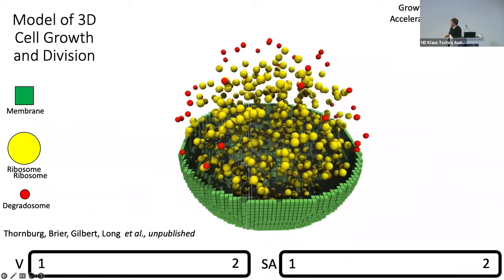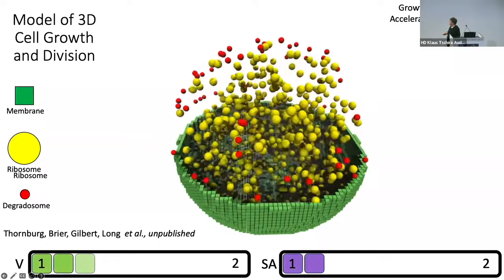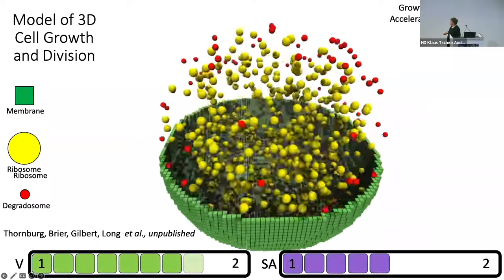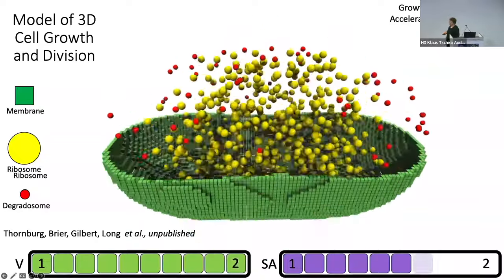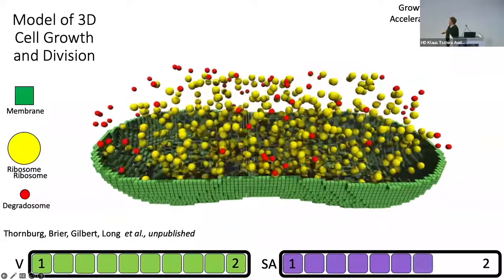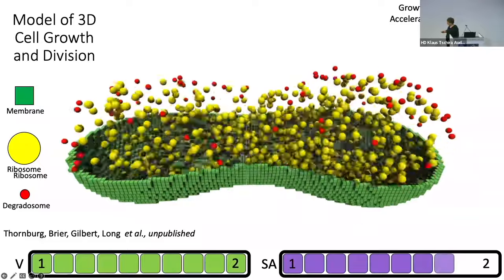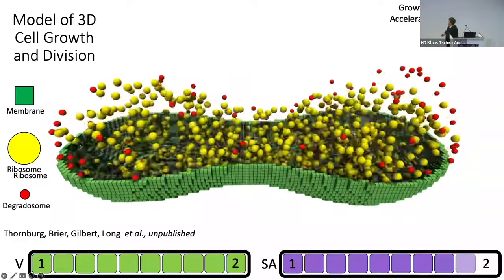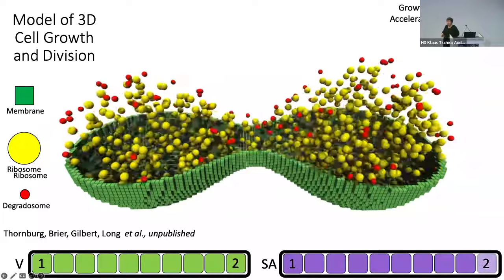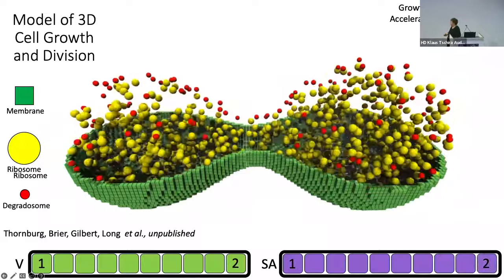This was our first attempt — everything now shown is unpublished. In the movie, we see just the ribosomes and degradosomes as the cell starts growing, doubles, and then starts converting to a prolate form. Here the transition is a little bit too fast and we don't get it quite symmetric. The Helfrich Hamiltonian is solved using a Monte Carlo technique, so you'll see it wobble in the solution. But we now at least have doubled the surface area and it should be able to pinch off.